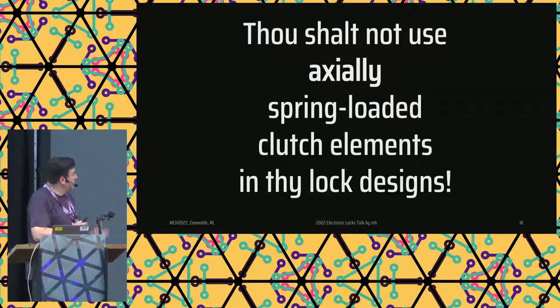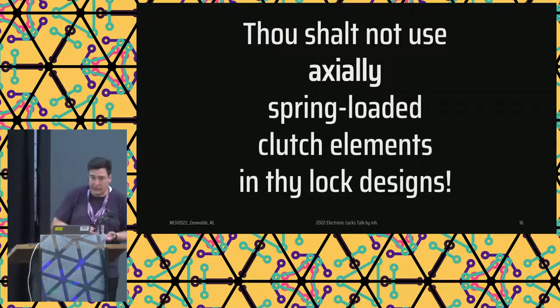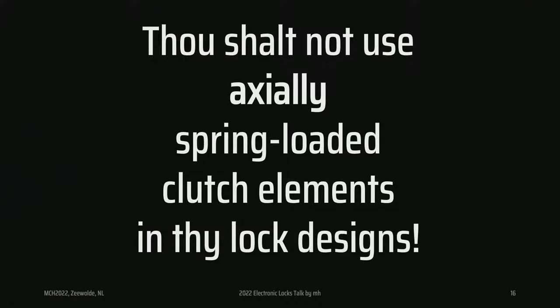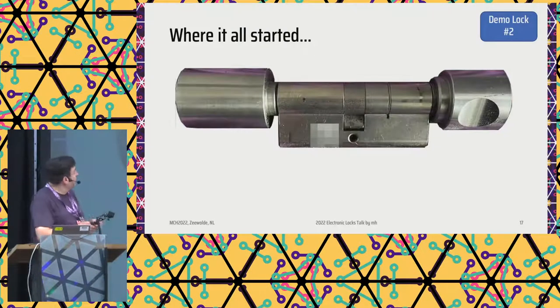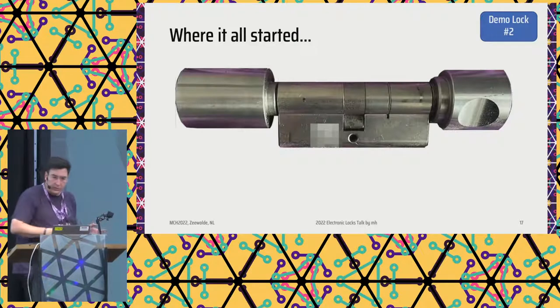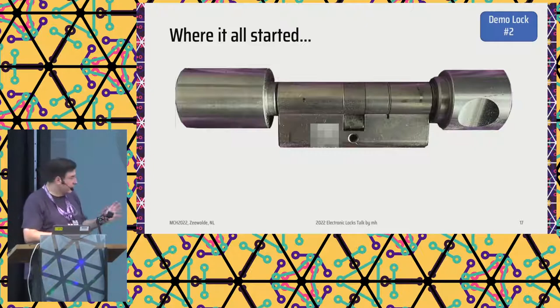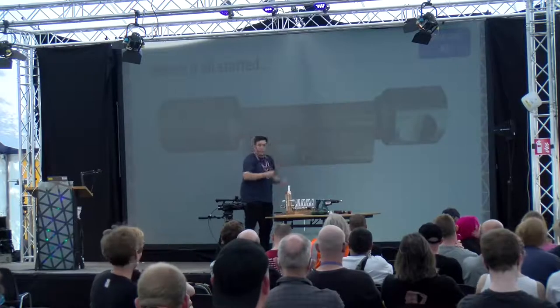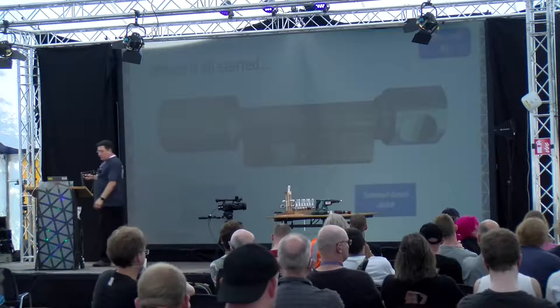There is one thing that should be part of the training of lock designers: you should not use spring-loaded clutch elements. I will demo other locks soon. This is where the whole thing started — this is a really old lock from a manufacturer, maybe 20 years ago. They have two more generations in the meantime that are not vulnerable to this, but I want to show it briefly. It actually does have a solenoid in it, so if you just hit on it, it will move. It has a solenoid-based clutch.